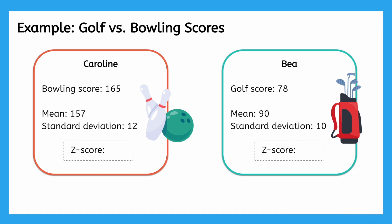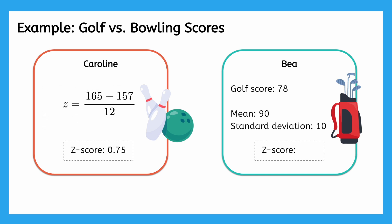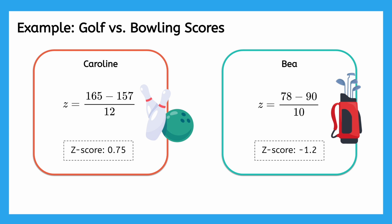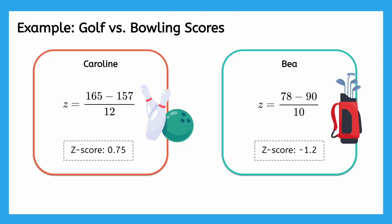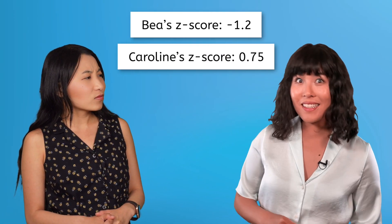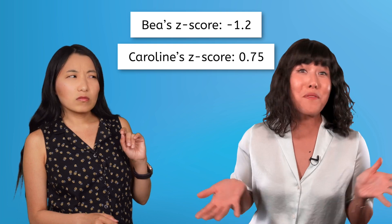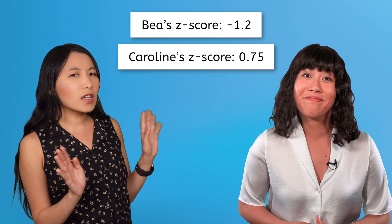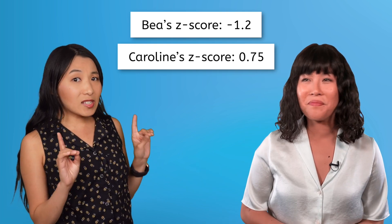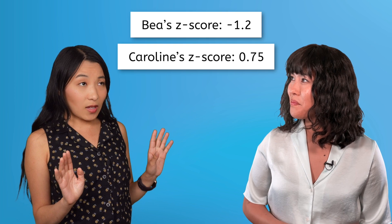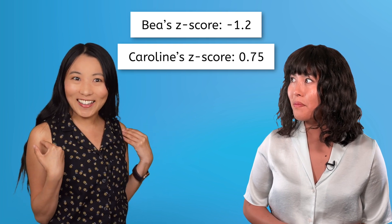Using the z-score formula, it looks like Caroline has a z-score of 0.75, and I have a z-score of negative 1.2. Based on these z-scores, who is the best at their sport? Take a moment to think about it. Well, I think that settles it — I'm the better athlete. Wait, wait, wait. Since my z-score is higher, that must mean I win, right?